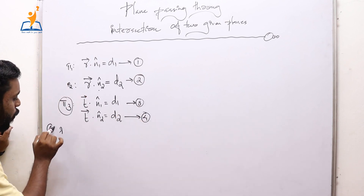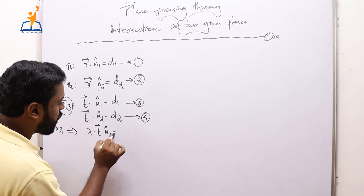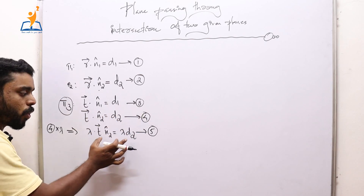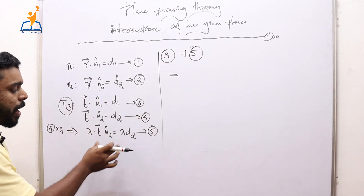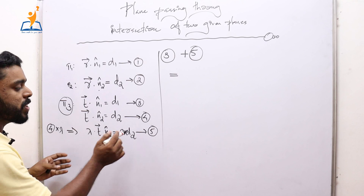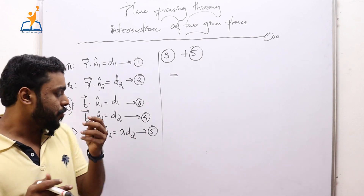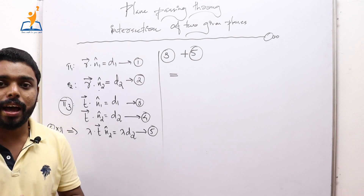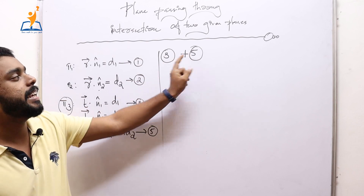We shall multiply equation 4 by lambda to get lambda(t · n2̂) = lambda·d2 — this is equation 5. We multiplied by lambda in order to show that this derivation is valid for all planes parallel to a single plane, i.e., to derive a general condition. Now we are going to add equation 3 and equation 5 to get a new equation.